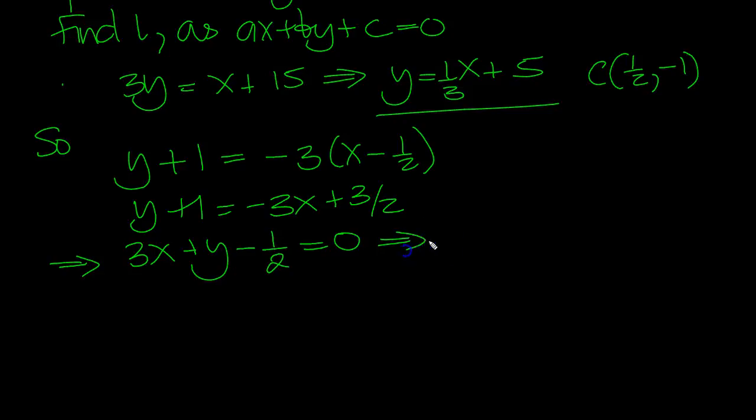So that tells us then that 6x plus 2y minus 1 equals 0. And there's our A, B, and C as integers.